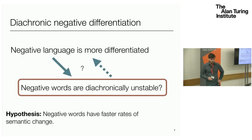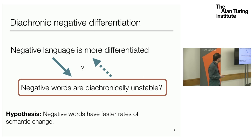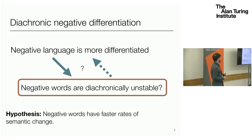Starting with the idea of what are the diachronic corollaries of negative differentiation — if we see that negative language is more differentiated and more diverse, a very reasonable hypothesis would be that we would expect negative words to be more unstable in their meaning over time. The specific hypothesis I want to look into is this idea that part of the explanation for why we have a greater diversity in our negative language is that negative words are much more unstable in their semantics and have faster rates of semantic change over time.